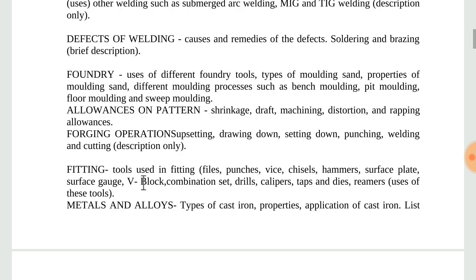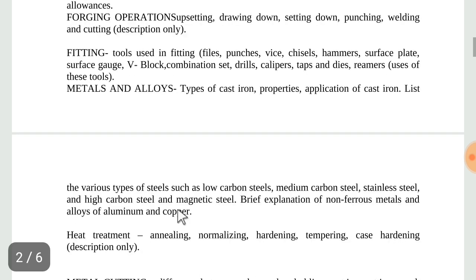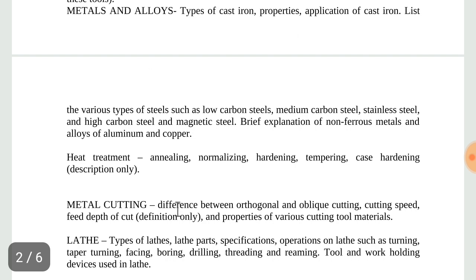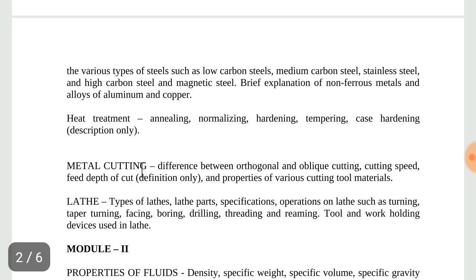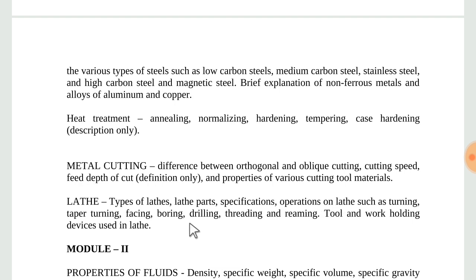Foundry also covers allowances on pattern. Then forging operations, fitting, metals and alloys, and metal cutting - the difference between orthogonal and oblique cutting as a typical exam question type. An important part is the lathe: types of lathe, lathe parts, specifications, and operations on lathe such as turning, taper turning, etc.